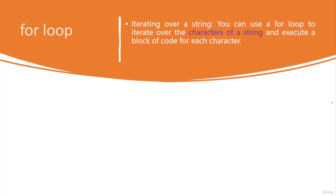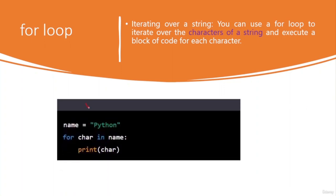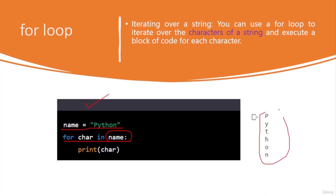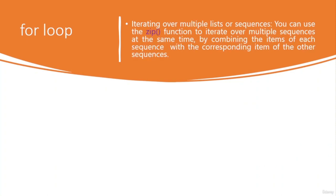You can use a for loop to iterate over the characters of a string and execute a block of code for each character. For example, 'name = "python"' and then 'for char in name: print(char)' — the loop iterates over each character in the name variable and prints it. The output shows each individual character of the word 'python'.